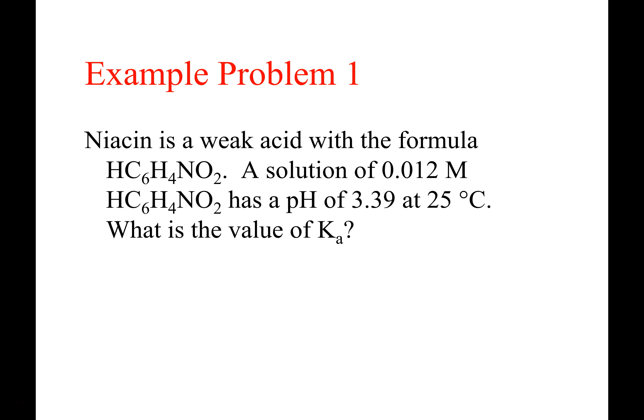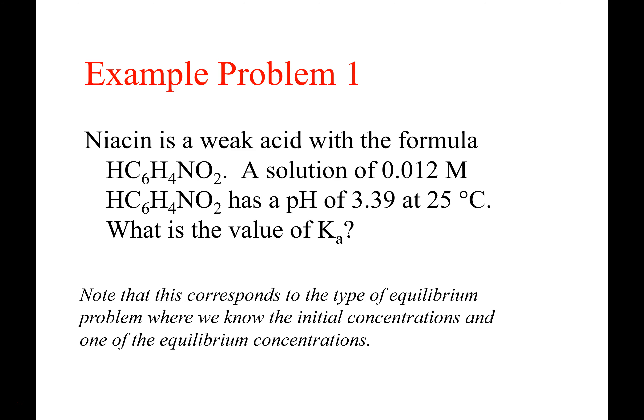The Ka is given in this case — oh, we're not supposed to find the Ka. Actually, this is going to be similar to unit three problems where we were trying to find a Kc. We were given the initial concentrations of the reactants and products, and we were given one of them at equilibrium. The equilibrium concentration we're given is going to be the hydrogen ion.